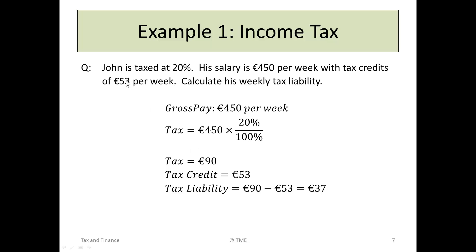However, he has a tax credit of €53. This serves to reduce the tax he would otherwise have to pay. So the tax credit is €53. His total tax was calculated at €90, reduced by €53. So the tax he actually has to pay is just €37.